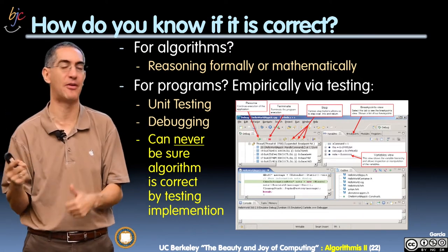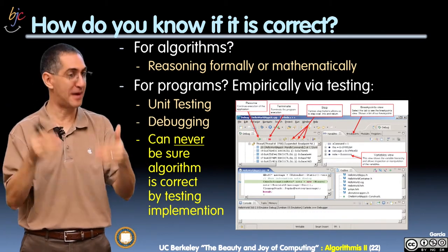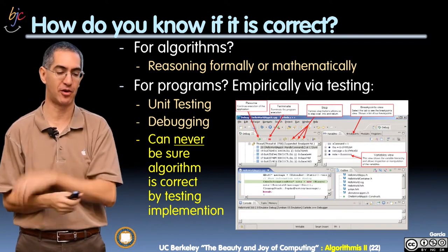You may have left one case out that you forgot to test. So you can never prove that something works just by testing it. You can only prove it by mathematically reasoning about it if it's correct.